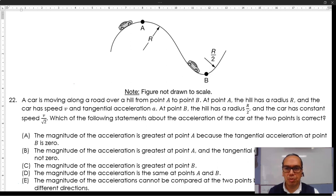Problem 22. A car is moving along a road over a hill from point A to point B. At point A, the hill has radius R and the car has speed v and tangential acceleration A. At point B, the hill has radius R and the car has constant speed v over square root of 2. Which of the following statements about the acceleration of the car at the two points is correct?